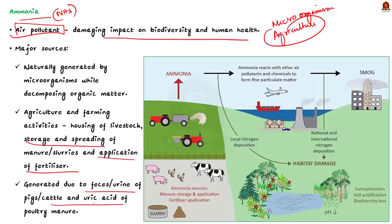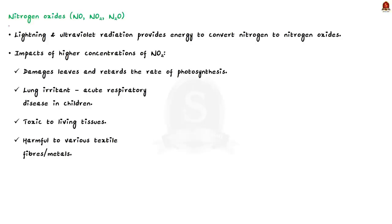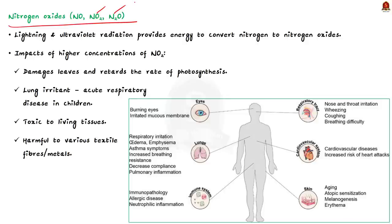Next, let us take up the nitrogen oxides. As I already said, it includes NO, NO2 and N2O. Now in nature, lightning and ultraviolet radiation provide enough energy to convert nitrogen to these nitrogen oxides. For example, you would have noticed the irritant red haze in the traffic and congested places. This is due to the presence of oxides of nitrogen. And these oxides have several negative impacts.